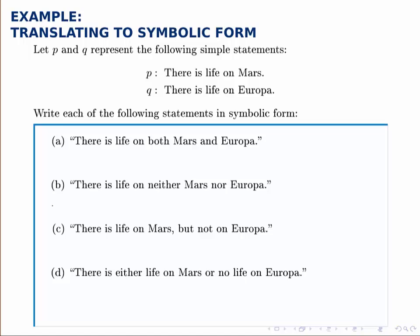For the first one, the statement says, there is life on both Mars and Europa. So that's equivalent to saying, there's life on Mars and there is life on Europa. Therefore, that looks like the symbol P and Q, both of them connected with the and operator. So we would write that symbolically as P, and then remember the and symbol is this upward pointing wedge, P and Q.